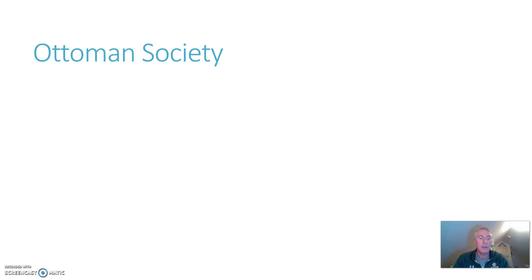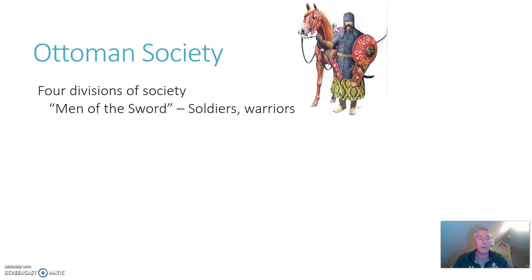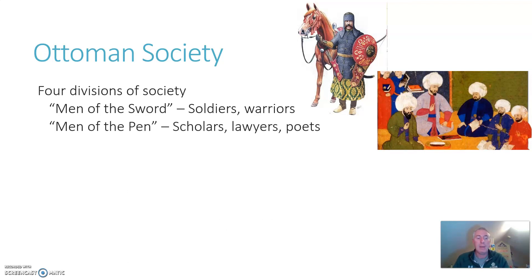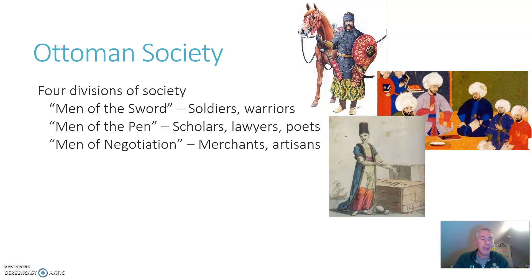Ottoman society was broken down very similarly to all societies we've learned this year, with certain groups getting higher status than others. It was divided into four basic divisions. First, you had what were called men of the sword — your soldiers, your warriors. The Ottomans were known as being very formidable warriors; like all Turks, they retained some of their nomadic heritage by being skilled archers and horse riders. Next, you have men of the pen — your academics, scholars, lawyers, poets. Ottoman society gave them a high status, showing its value of learning and scholarship. After them, the men of negotiation: merchants made up the bulk of this group, making deals by haggling with buyers and sellers. Artisans were also included in this group, so this group makes up your basic middle class.